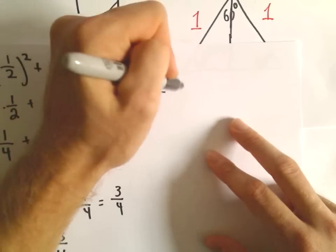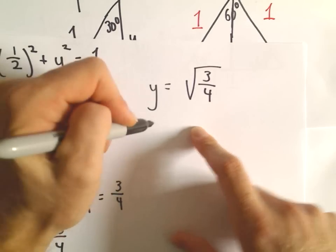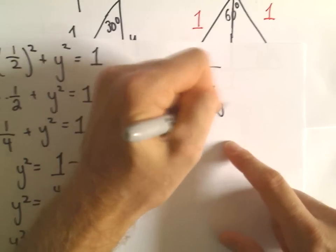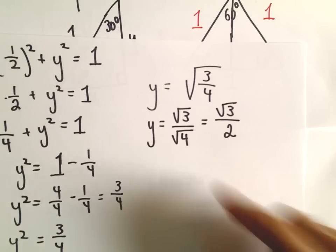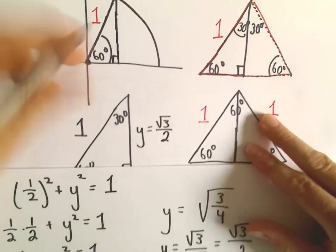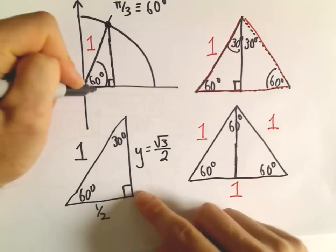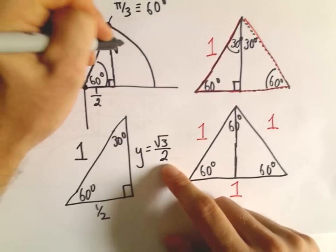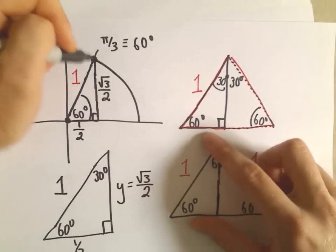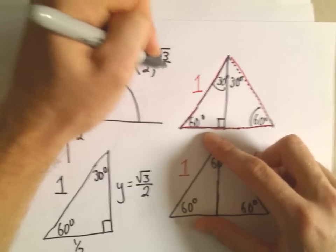Taking the square root — using the positive value since the y-coordinate is positive in the first quadrant — we get √3 over √4. The square root of 4 simplifies to 2, so the height is √3 over 2. Now I've got everything: by the geometric argument we moved over 1/2, and the height is √3/2. So the point that corresponds to 60 degrees, or π over 3, has coordinates (1/2, √3/2).